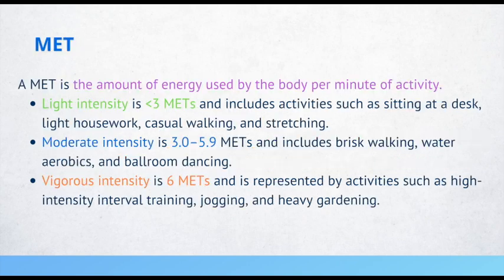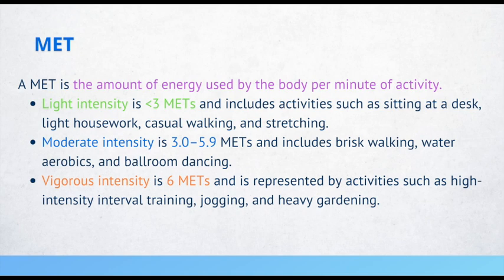METs (metabolic equivalents) measure the amount of energy used by the body per minute of activity. Light intensity is less than 3 METs and includes activities such as sitting at a desk, light housework, casual walking, and stretching. Moderate intensity is 3 to 5.9 METs and includes brisk walking, water aerobics, and ballroom dancing. Vigorous intensity is 6 or more METs and includes high-intensity interval training, jogging, and heavy gardening.